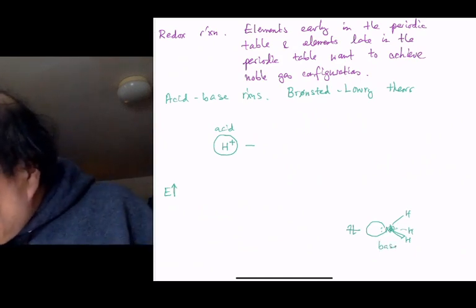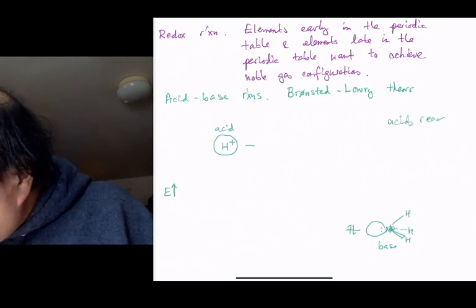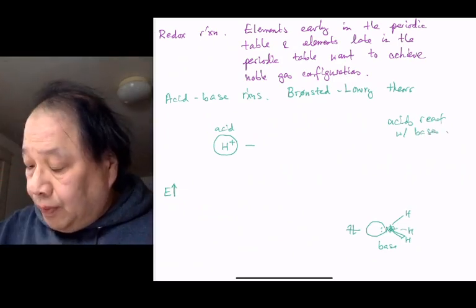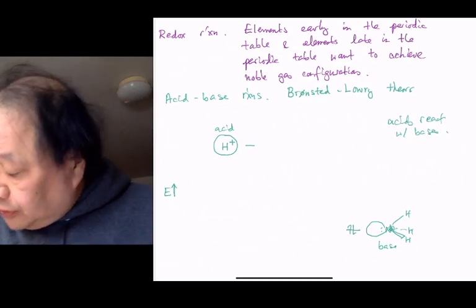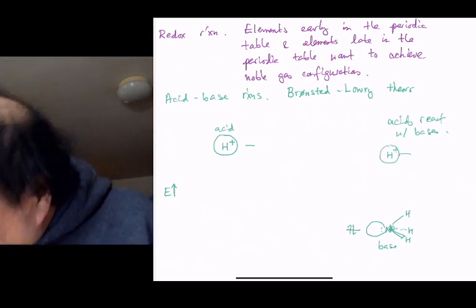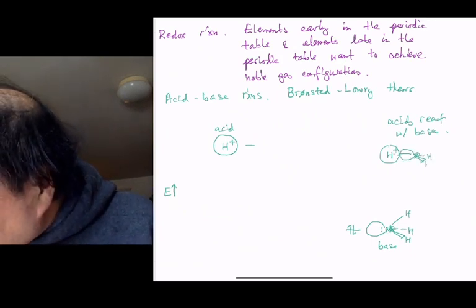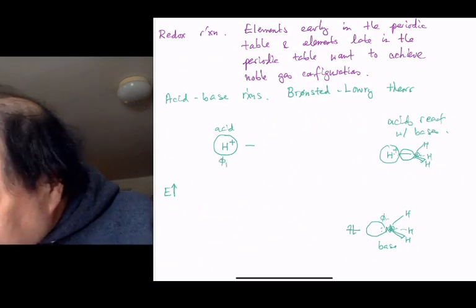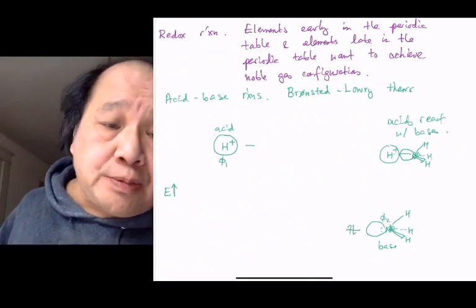And as we know, acids react with bases. That's the point of an acid-base reaction. And if we just look at this, the H+, here's my H+, and it's now getting about to react. It's about to get close to this NH3. And when they get close, we'll call this one phi 1 and we'll call this phi 2.